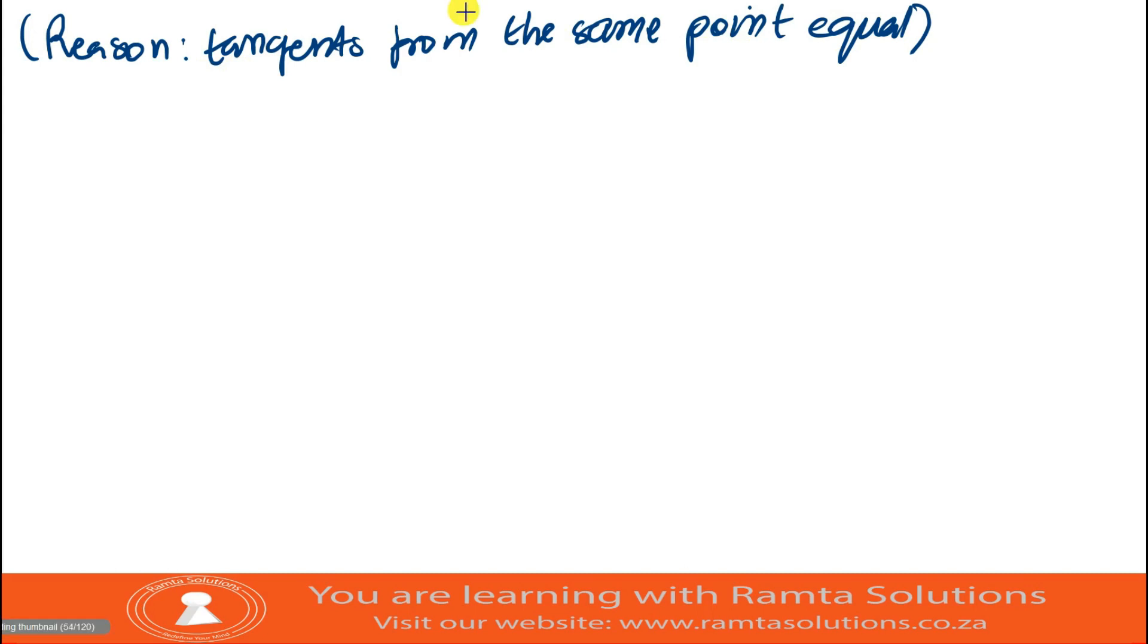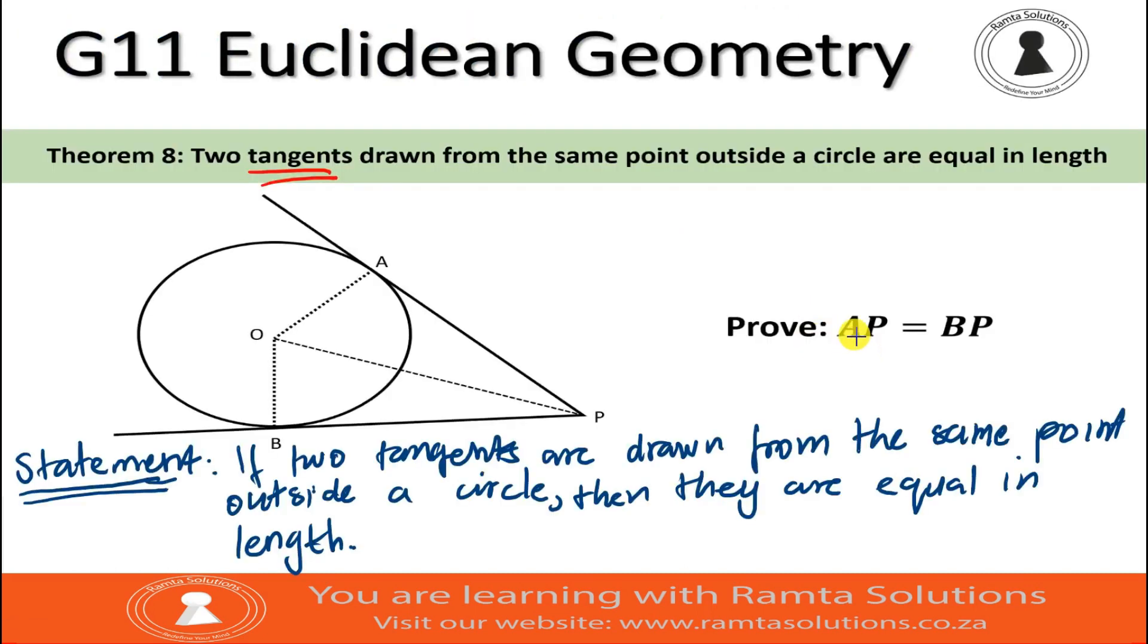Here we are required to prove that AP is equal to BP. So, given a diagram like this, everything is given here. However, some of the things you will need to know.